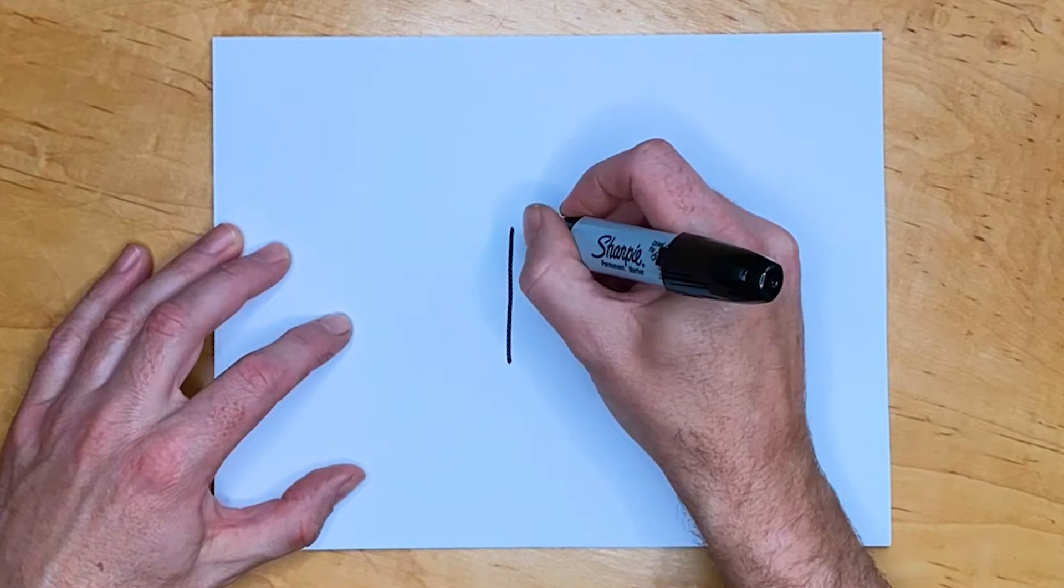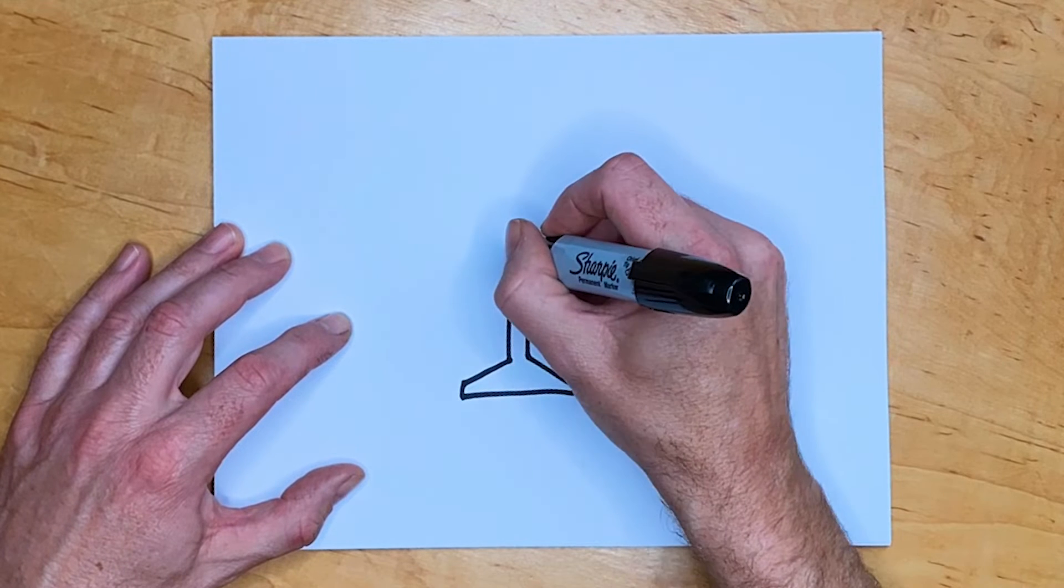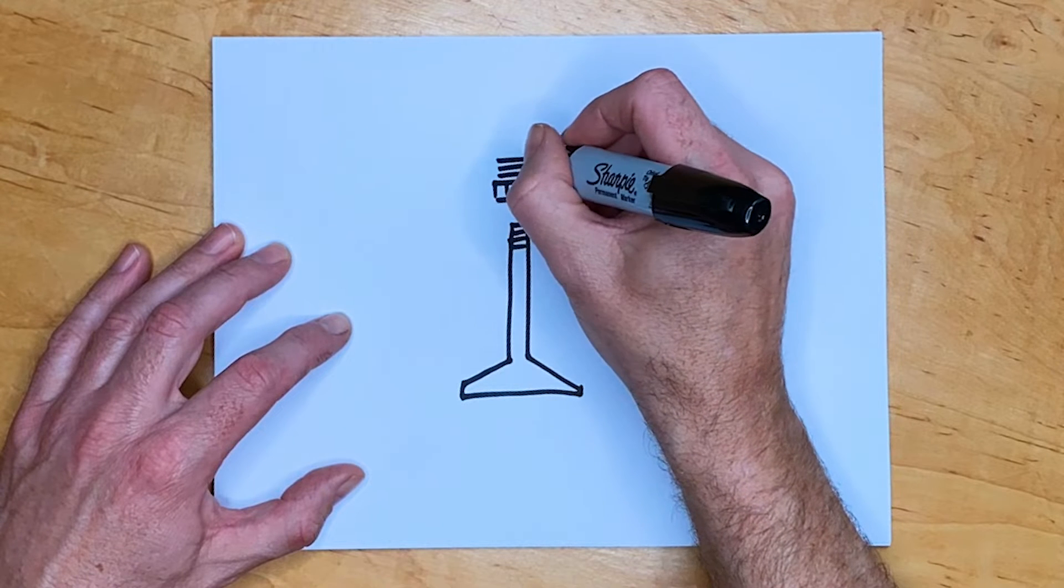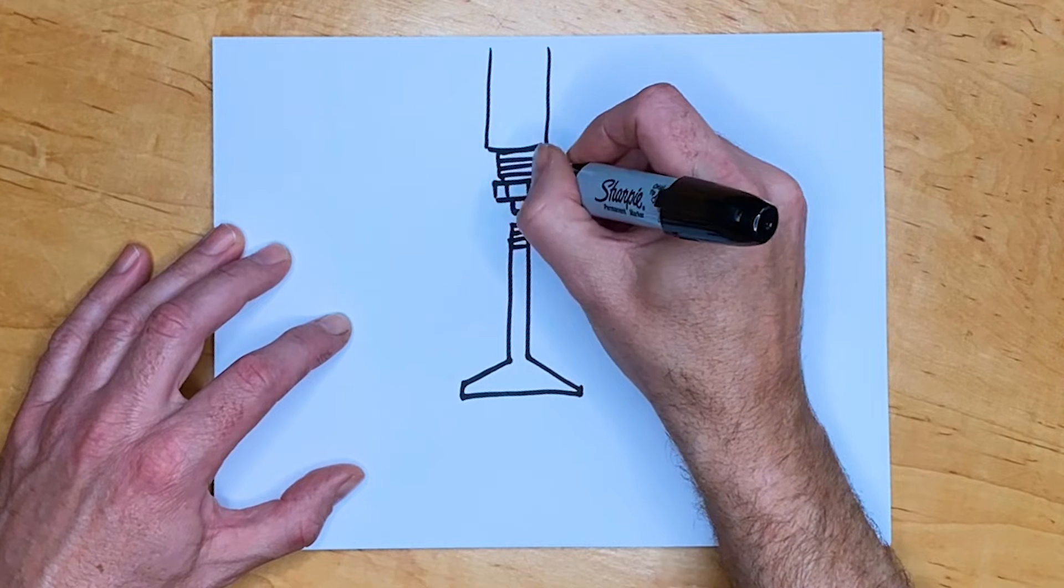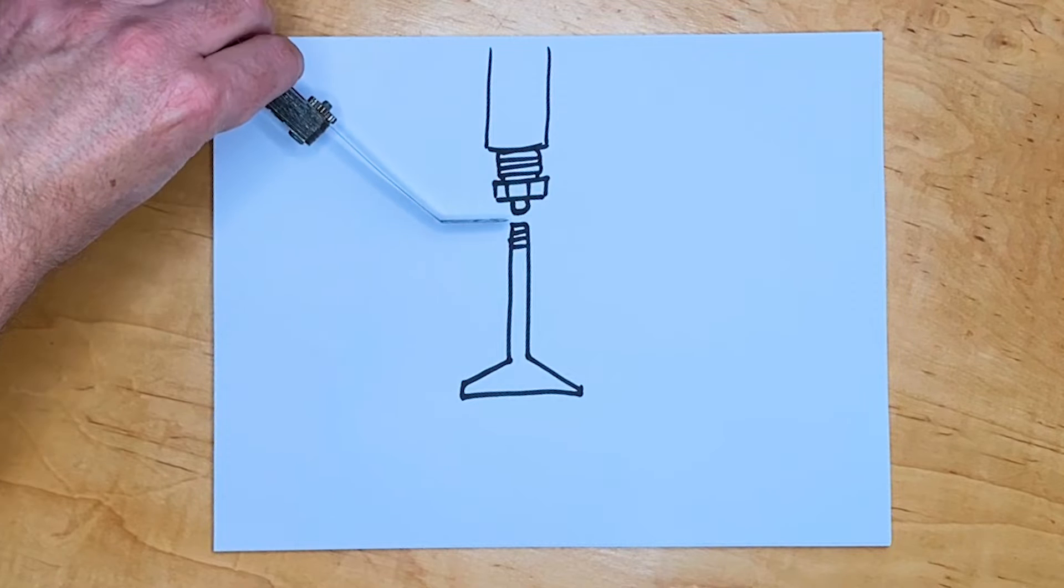Hydraulic lifters are a development to solve a problem: expansion. Metal gets bigger as it heats up. Prior to hydraulic lifters you needed to leave a gap between the top of the valve and the lifter to allow for that expansion. That gap is called valve lash and needs to be adjusted with a feeler gauge to be within a certain tolerance.